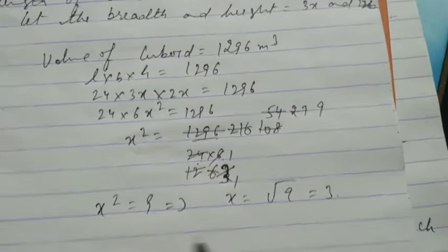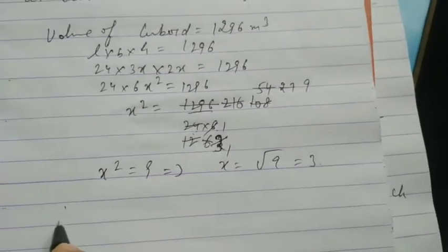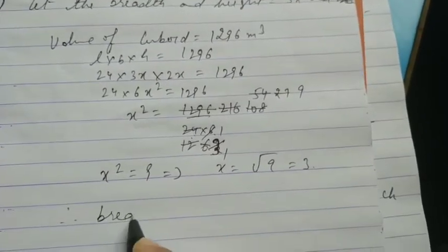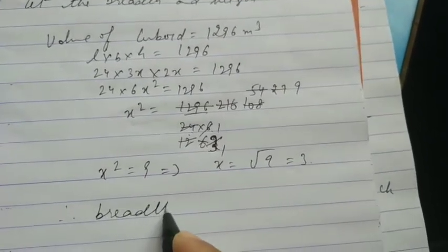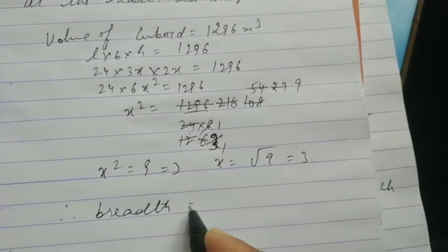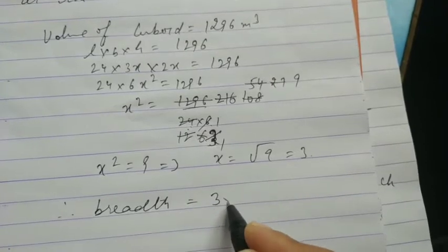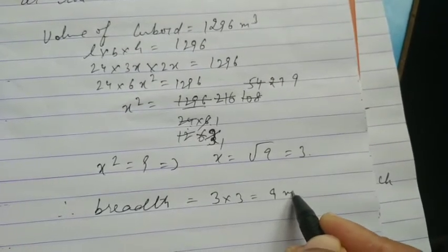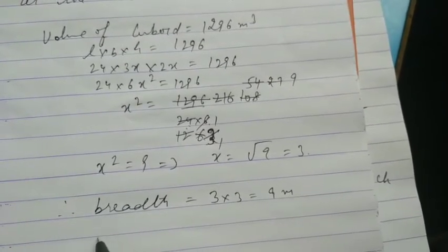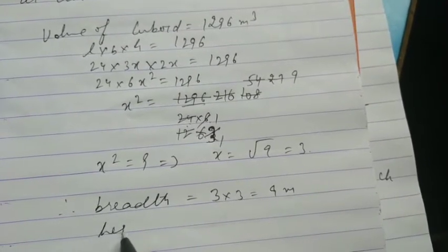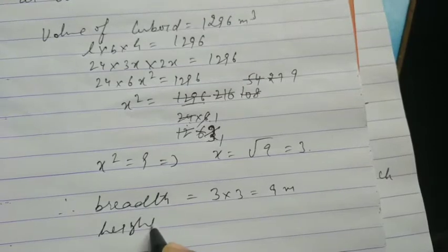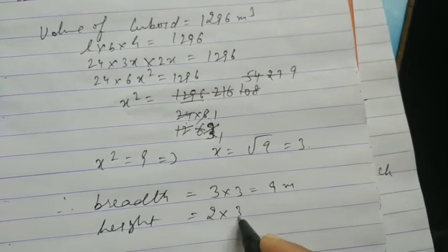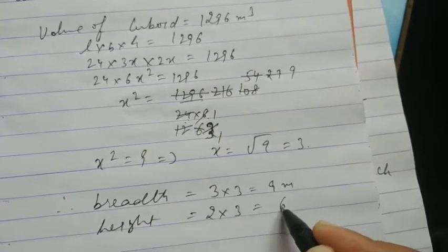Therefore, breadth is 3 into x, that is 3 into 3 equals 9 meter. And height is 2 into x, that is 2 into 3 equals 6 meter.